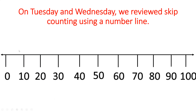We also learned how to hop our numbers when we want to multiply. So if I want to multiply 10 times 7, I'm going to hop 7 times until I land on my answer: 1, 2, 3, 4, 5, 6, 7. So 10 times 7 would equal 70.